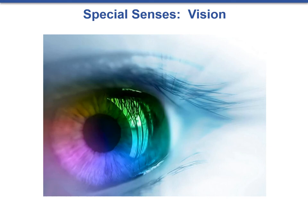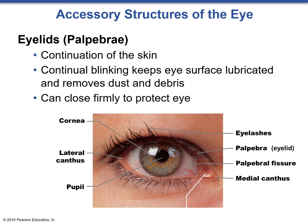This is Lecture 6 for Biology 177, focusing on vision and the eyes. As we work our way through the eye, we're going to start first with some of the more superficial structures, and then work through the internal structures and focus on the physiology of the eye.